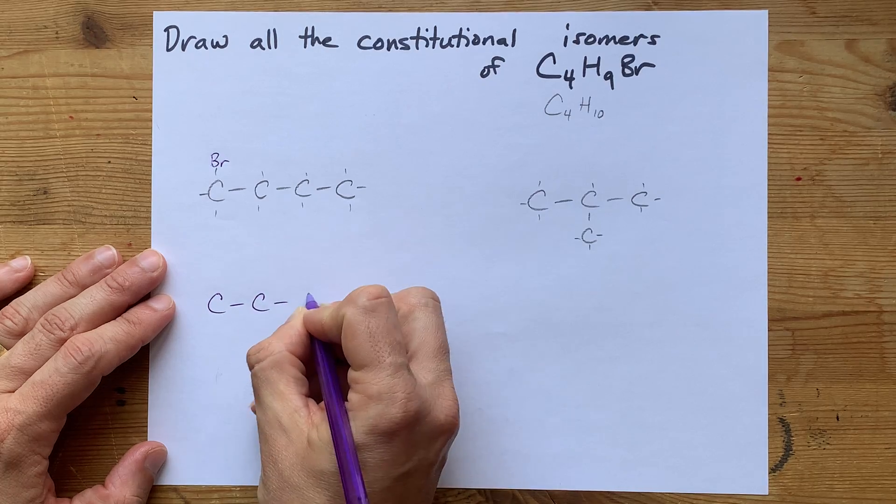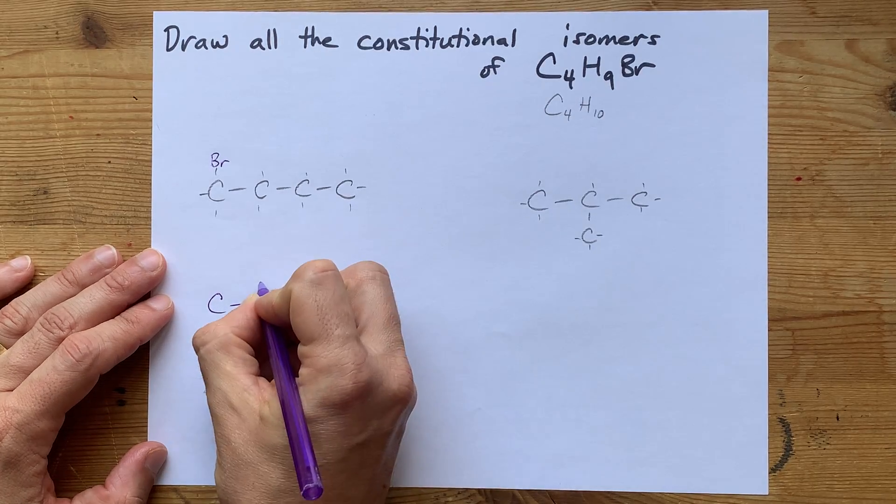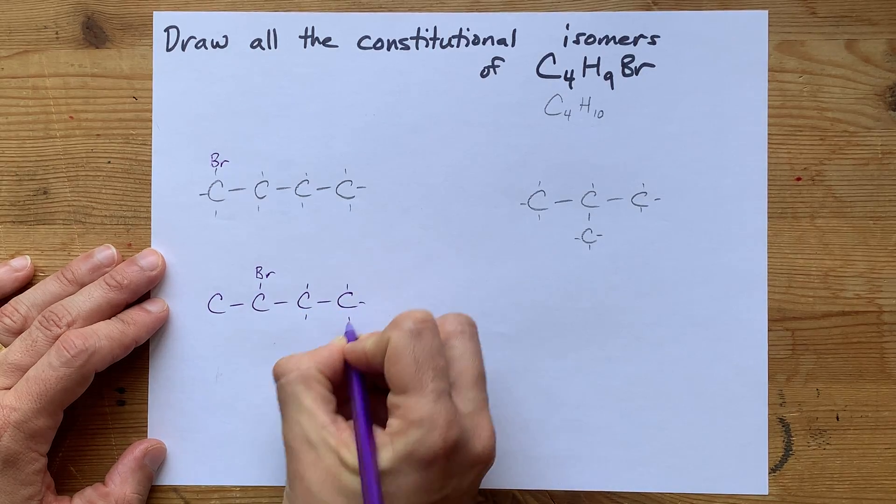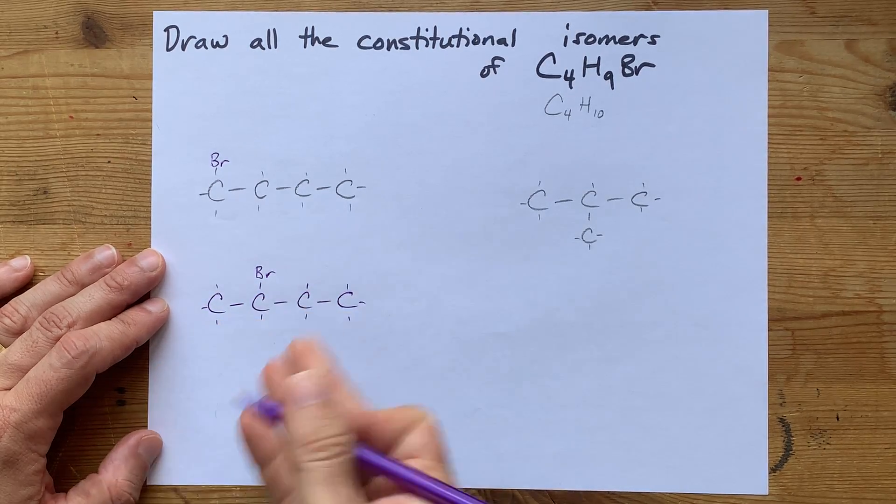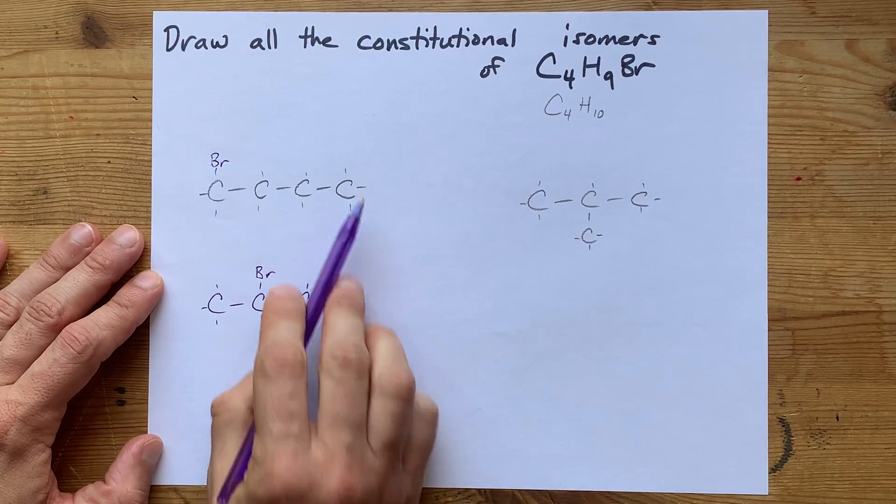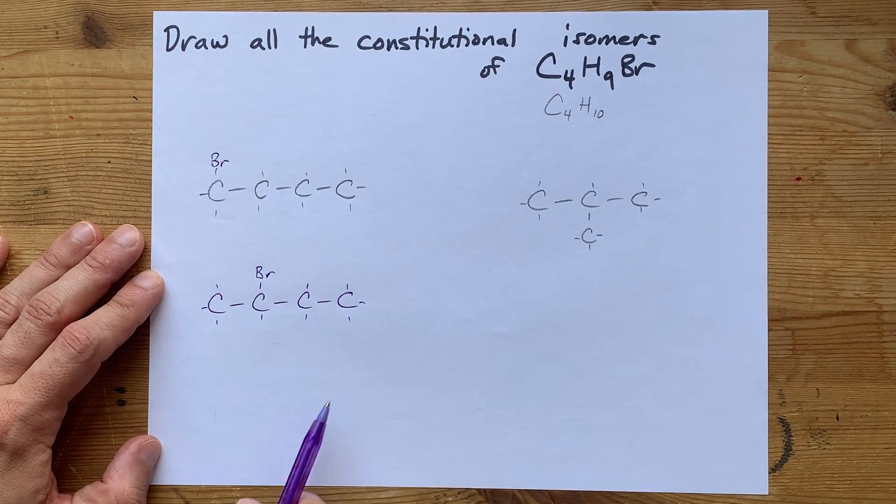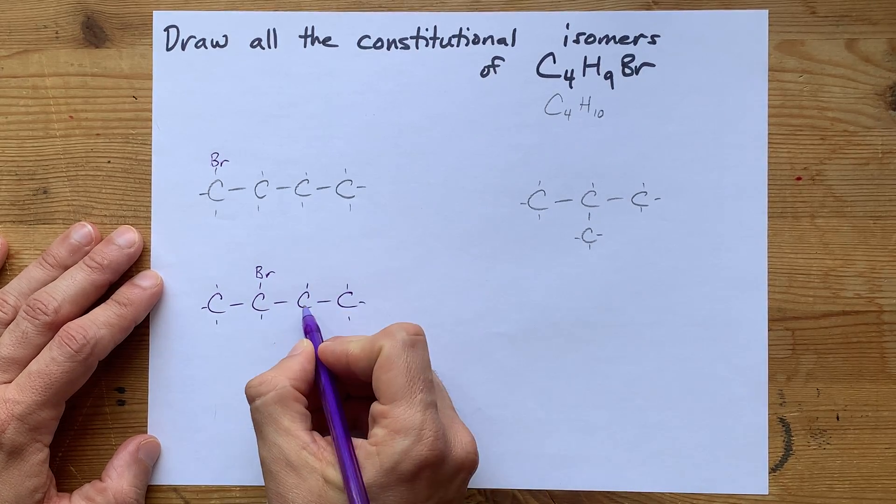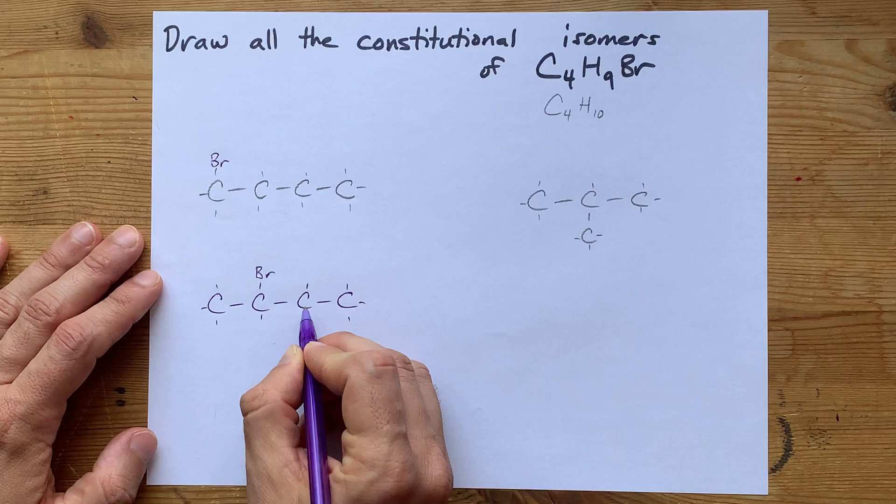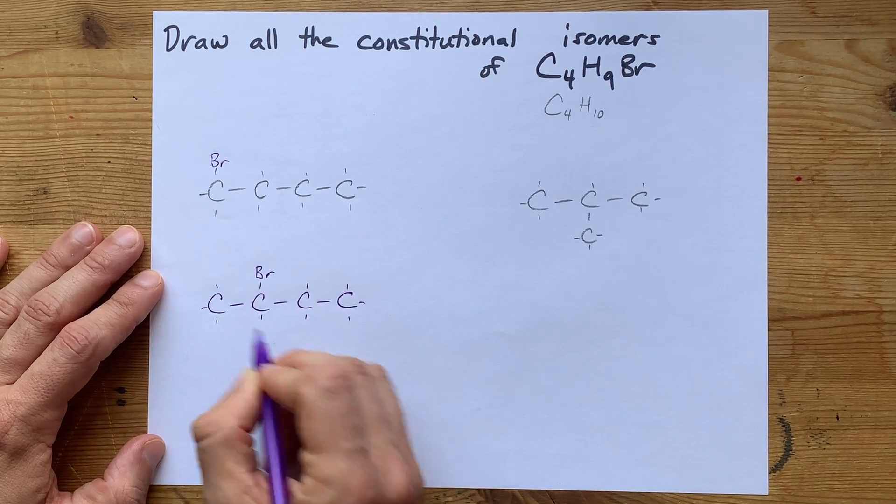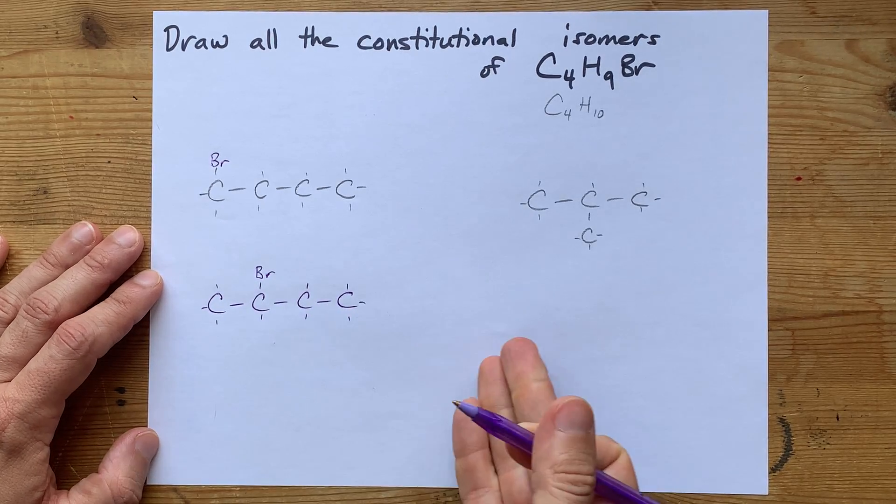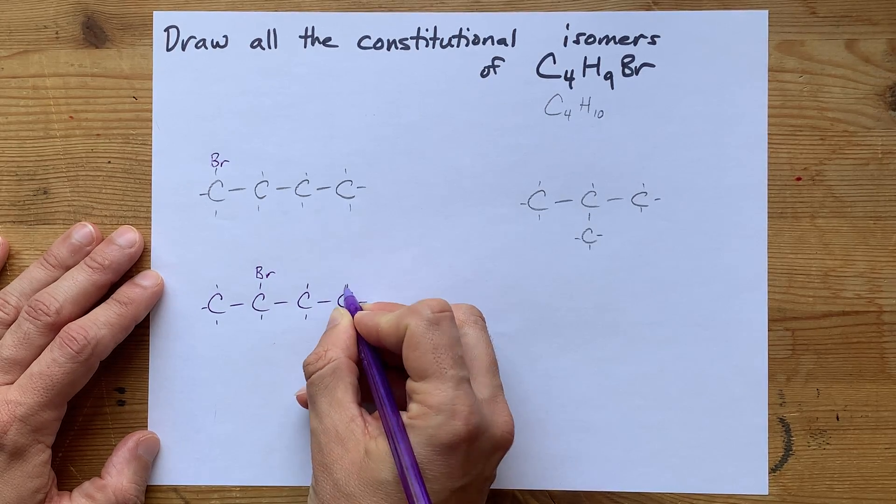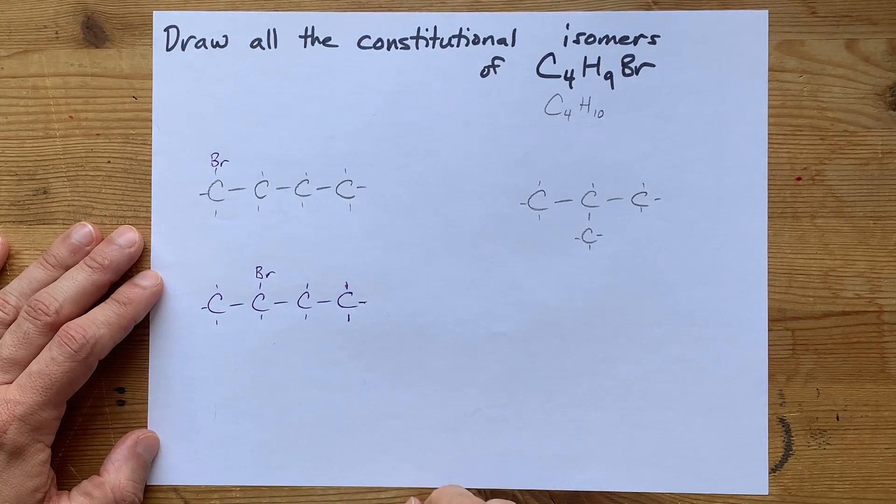Could I put a bromine on the second carbon? Yes. Is that a different molecule though? And the answer is yes, it is. This is one-bromobutane, this one's two-bromobutane. Can I put bromine on the third carbon? Well, if I did, then actually that just becomes the second carbon if you count from the other side. One, two, bromobutane again. And putting bromine on the fourth carbon here is the same as if I put it on the first one. You just flipped it.